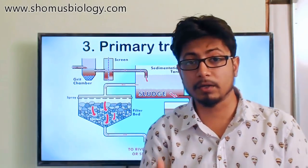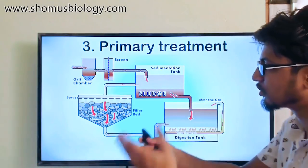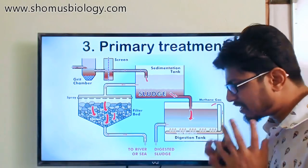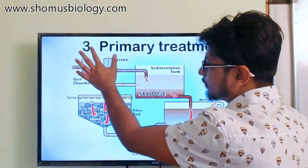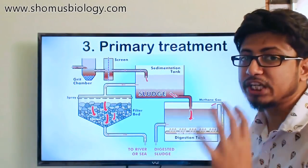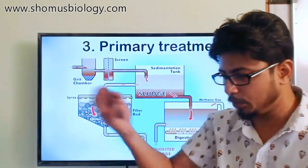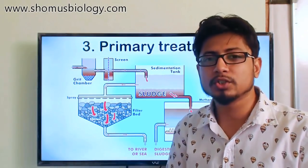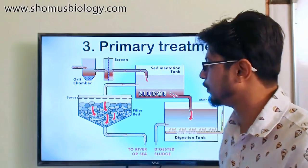The grit chamber is generally part of preliminary wastewater treatment, where screeners separate the larger solid particles. We've already covered that part in the last video — if you haven't seen it, please watch it so this video makes more sense.